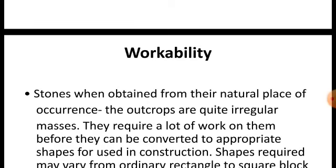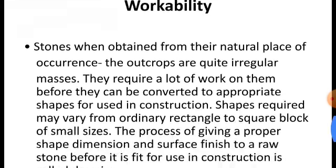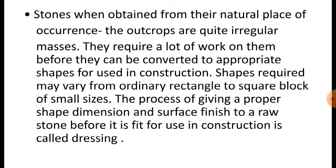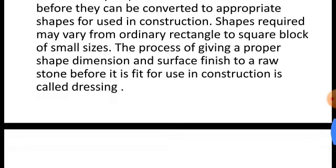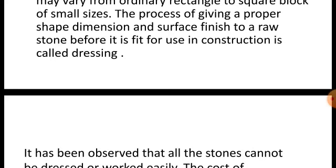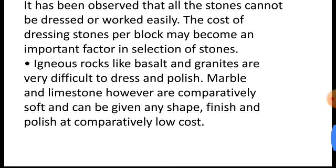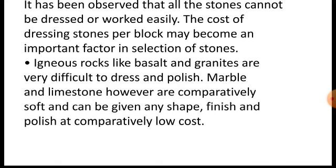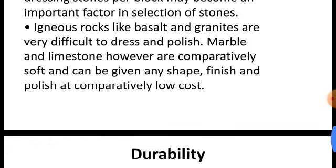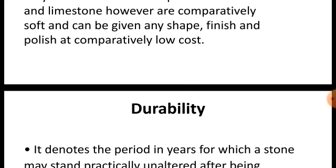Workability is also an important property. Stones obtained from their natural place of occurrence are quite irregular masses. They require a lot of work before they can be converted to the appropriate shape for use in construction. The required shape may vary from ordinary rectangular to square blocks of small size. The process of giving proper shape, dimensions, and surface finish to raw stones is called dressing. Igneous rocks like basalt and granite are very difficult to dress or polish, while marble and limestone are comparatively soft and can be shaped more easily.